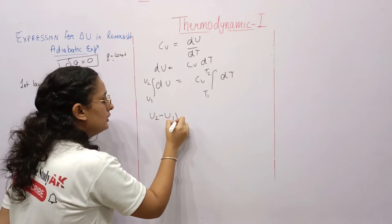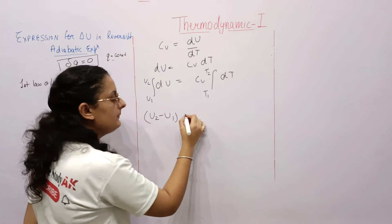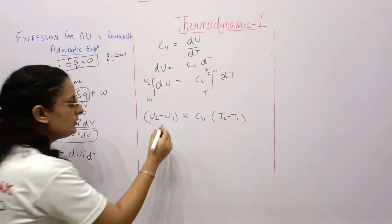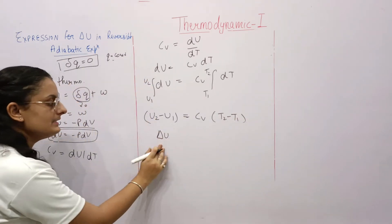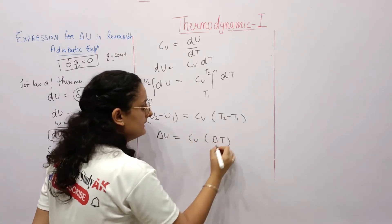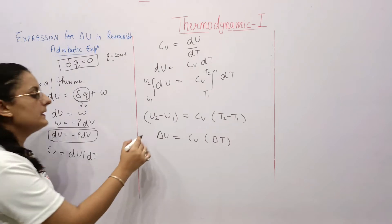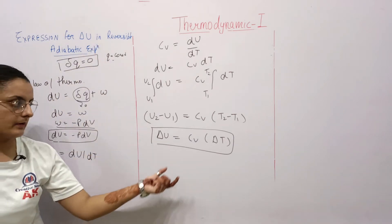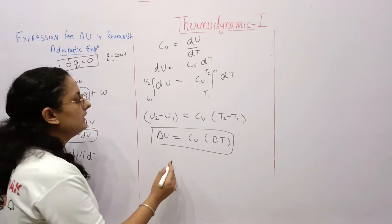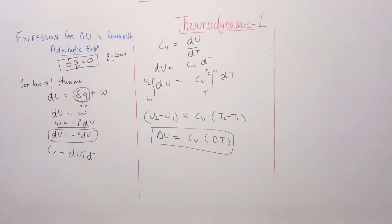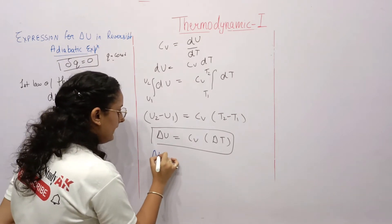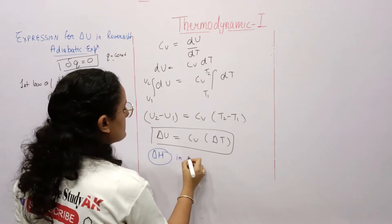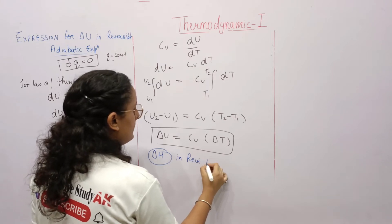Integrating both sides from U1 to U2 and T1 to T2: U2 - U1 = cv·(T2 - T1). So delta U = cv·ΔT. This is the expression for change in internal energy in the adiabatic expansion case.